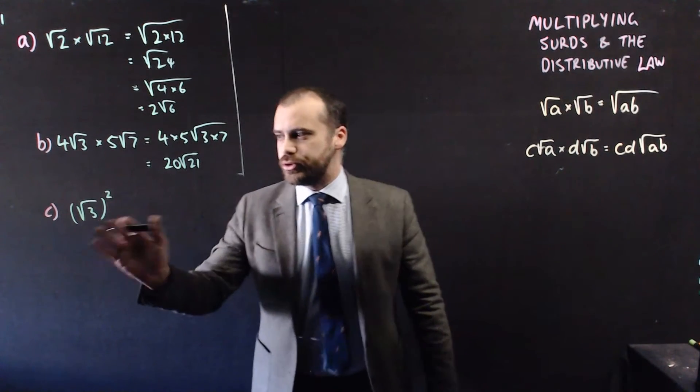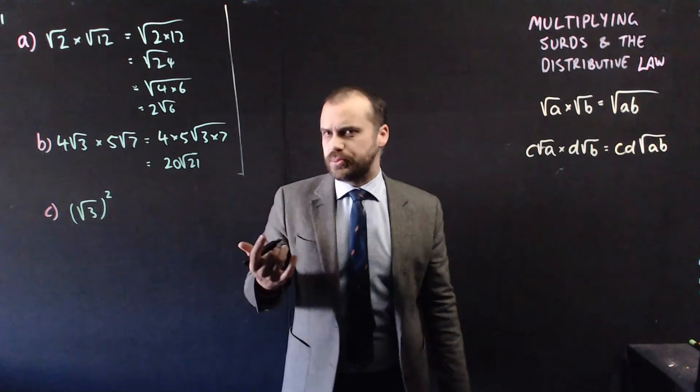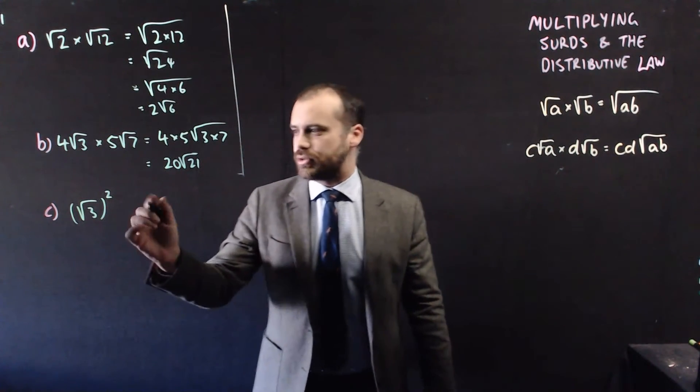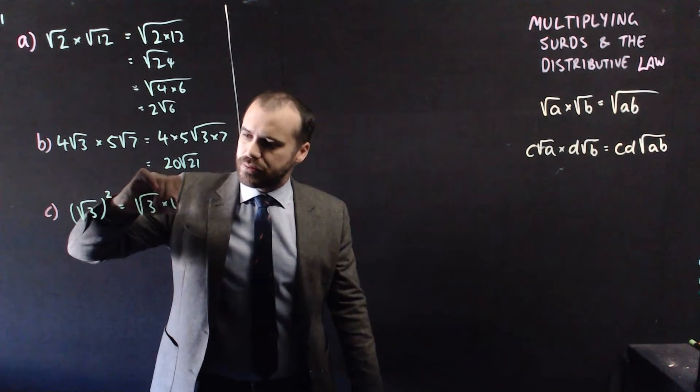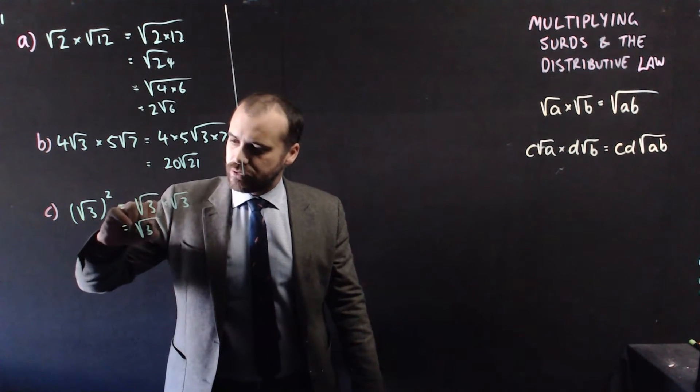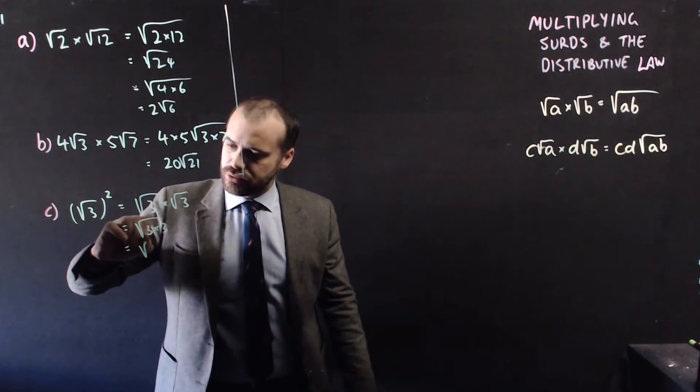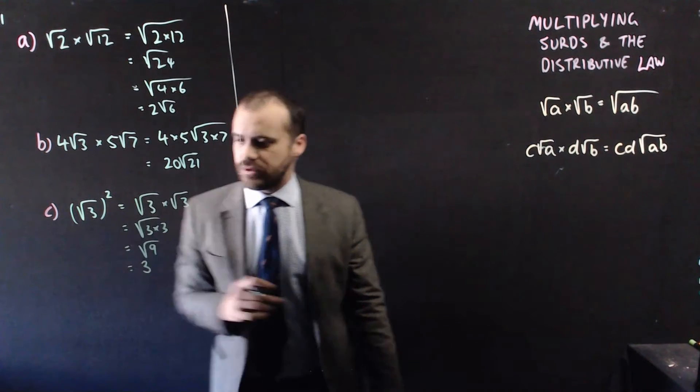Now what about this one, root 3 squared? Well, squared just means times by itself, so this is still multiplication, root 3 times root 3. So it would be root 3 times root 3, which is root 3 times 3, which is root 9, and the square root of 9 is 3.